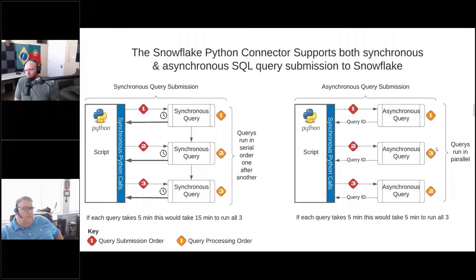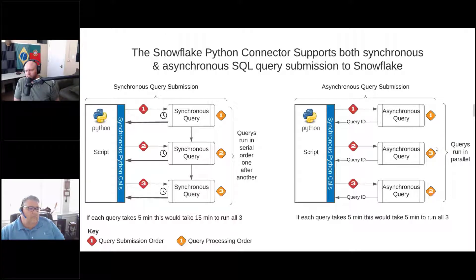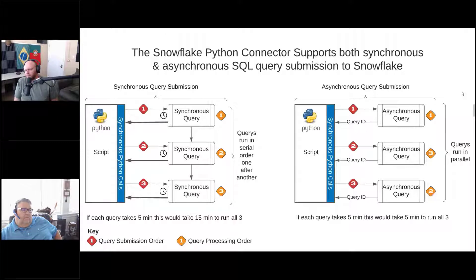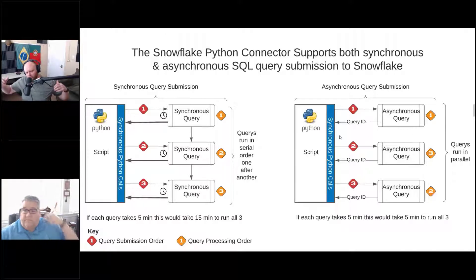Depending on the query it may require different size warehouses, but this is the value proposition of the cloud and especially of Snowflake — this idea of elastic scalability. You have the ability to scale up for five minutes, run your queries asynchronously, and then scale back down again.